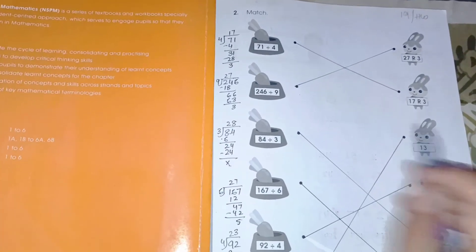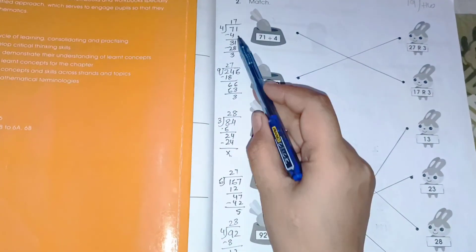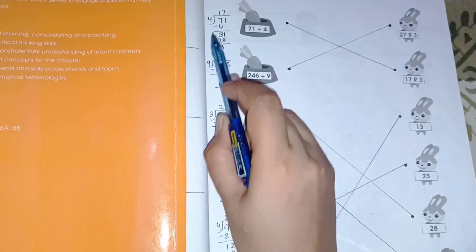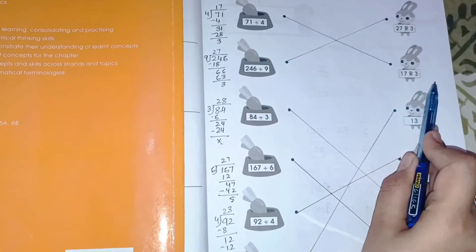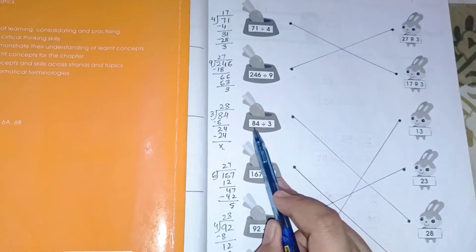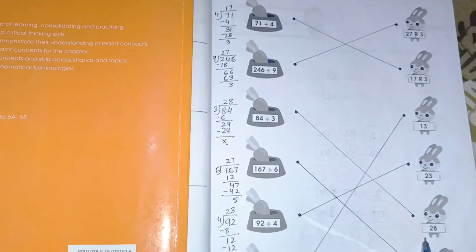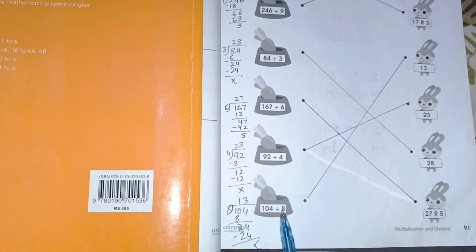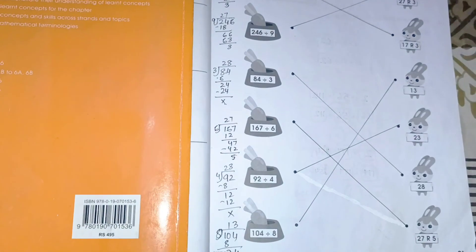We also need to solve 408 divided by 3 and 800 divided by 3 on page 90. Moving on to page number 91, we have a revision section. Solve each division and match it with the correct answer: 71 ÷ 4 is 17 remainder 3; 246 ÷ 9 is 27 remainder 3; 84 ÷ 3 is 28; 167 ÷ 6 is 27 remainder 5; 92 ÷ 4 is 23; and 104 ÷ 8 is 13.